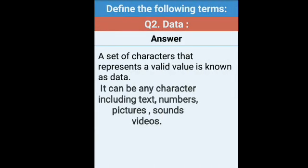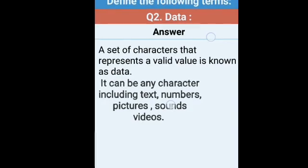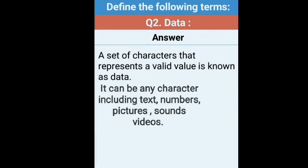The second term is data. A set of characters that represents a valid value is known as data. It can be any character, including text, numbers, pictures, sound and videos. All files stored inside a computer — audios, videos, and any content you write — are all known as data.